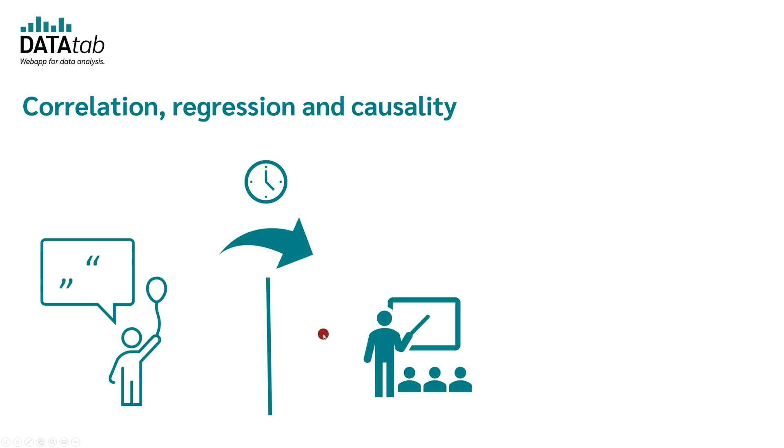If there is a correlation between the age at which a child speaks his or her first sentences and later school success, it is clear that the time at which a child speaks his or her first sentences influences later school success and not the other way around. Later school success cannot influence the age at which a child speaks his or her first sentences.